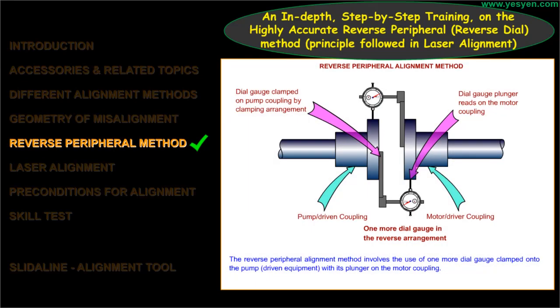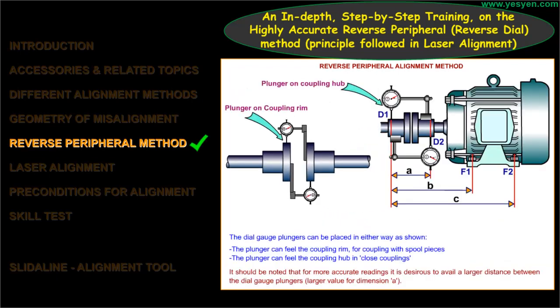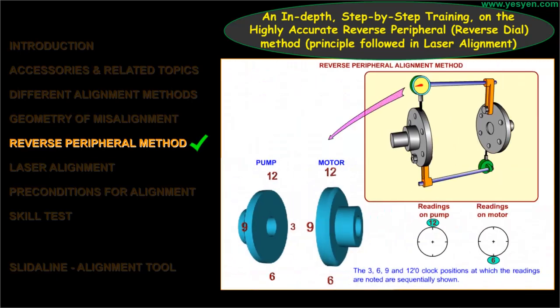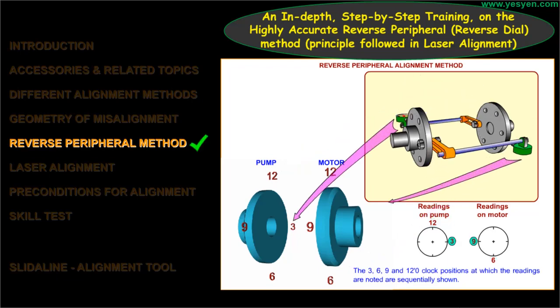Reverse peripheral method: An in-depth, step-by-step training on the highly accurate reverse peripheral or reverse dial method. This is the principle followed in laser alignment.